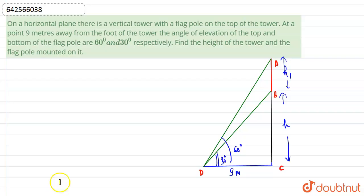Hello everyone, let's start the question. The question says that on a horizontal plane there is a vertical tower. So we have assumed the vertical tower as H with a flagpole.